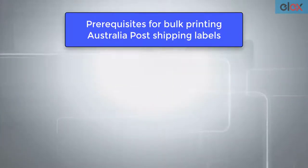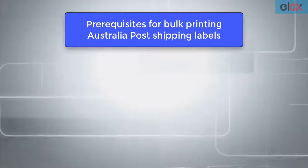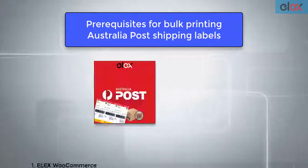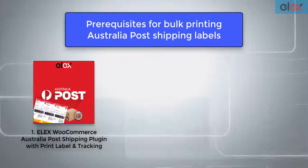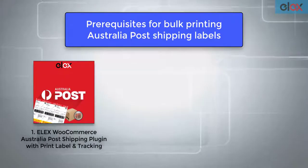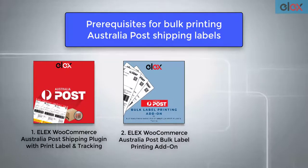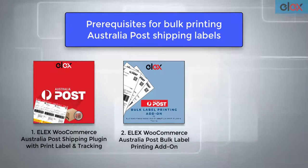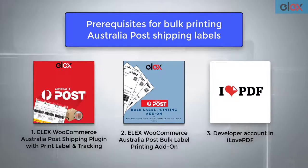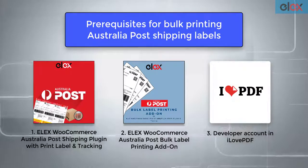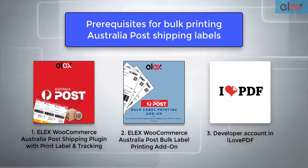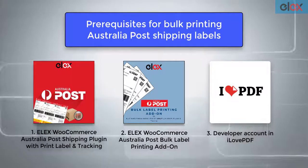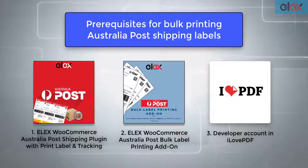For bulk printing Australia Post labels, you need three things: first, the Elix Australia Post shipping plugin for WooCommerce; the Elix WooCommerce Australia Post Bulk Label Printing Add-on; and lastly, a developer account in ilovepdf. The Bulk Label Printing Add-on uses the ilovepdf API to merge the labels into a single PDF.